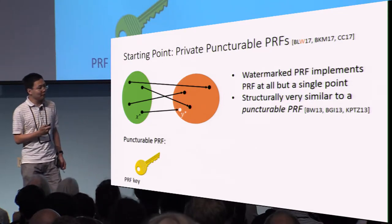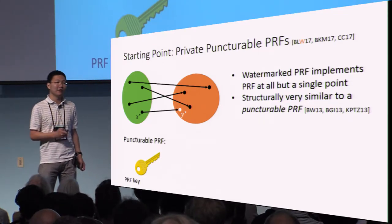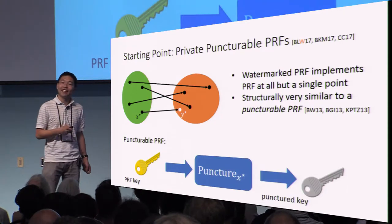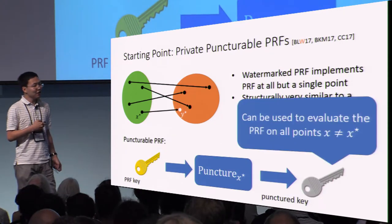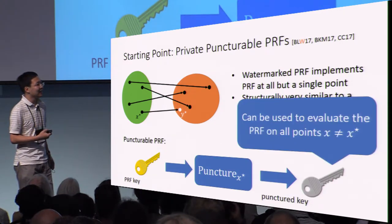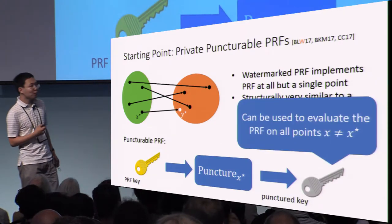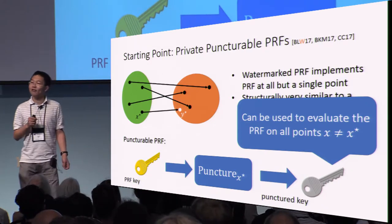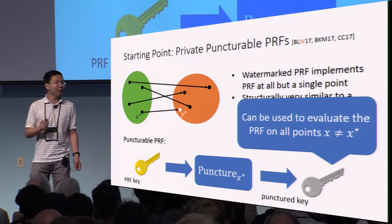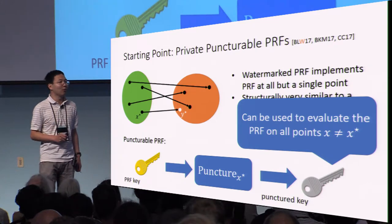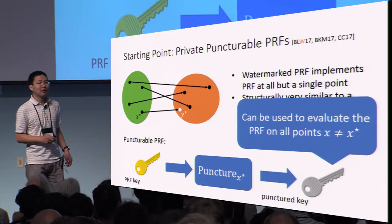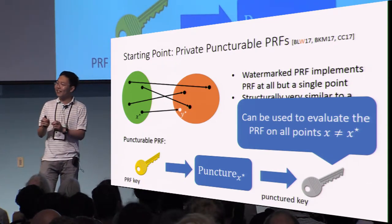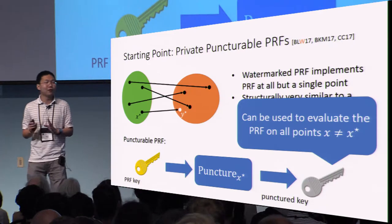A puncturable PRF is the following. It has a PRF key and there's a puncturing algorithm that takes as input a point and outputs a new punctured key. The special property is that this new punctured key can be used to evaluate the pseudo-random function everywhere except the single point x*. So it implements the same function as the original key, but at x* the value is something else.